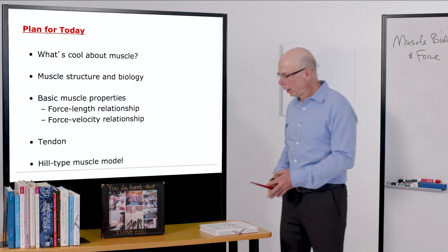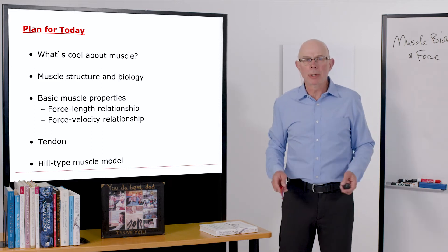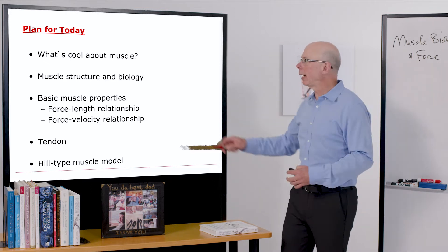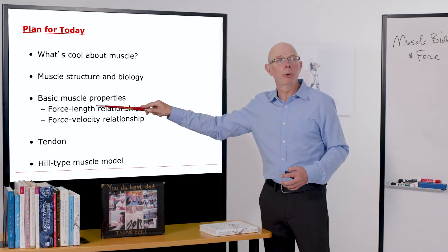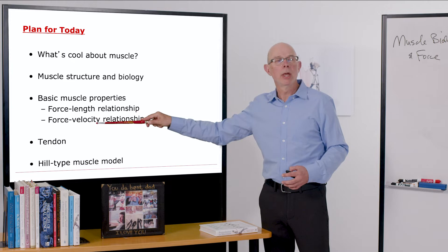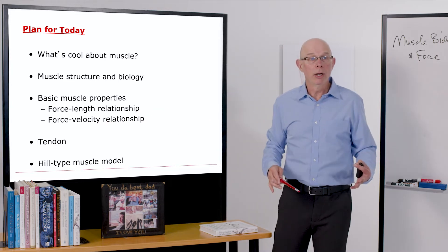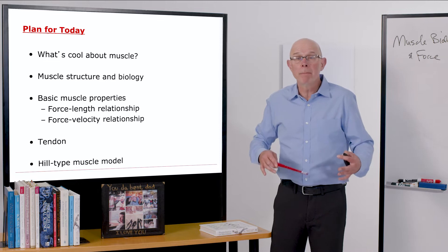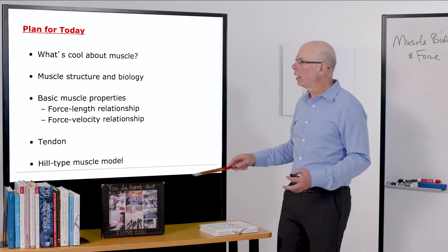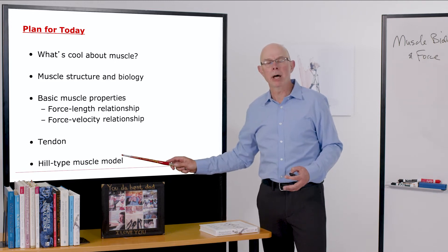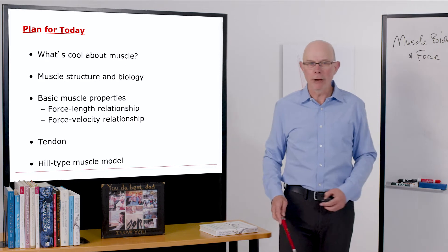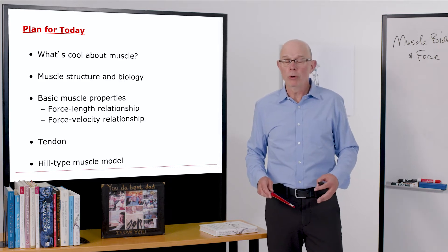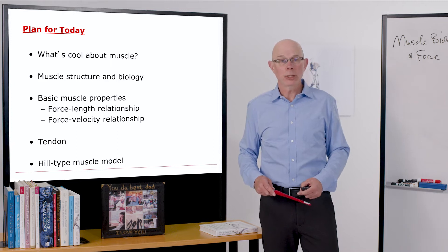The plan for today will follow this path. We'll talk about what's cool about muscle, a little bit about muscle structure and biology. We'll pause there and then go into detail on muscle properties, in particular, two very important properties, the force-length relationship and the force-velocity relationship. We'll pause there and then we'll talk about tendon. Tendon is in series with muscle. Tendon enables force to get from muscle out to the bone. And we'll conclude this first section to talk about a Hill-type model of muscle. It's named after A.V. Hill, a very famous muscle scientist who won the Nobel Prize for his work in muscle metabolics. We'll formulate a mathematical and engineering model of muscle.